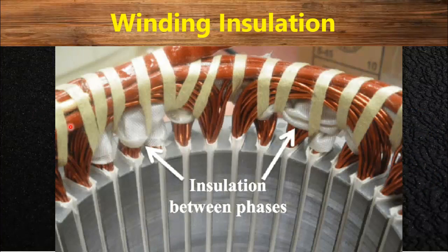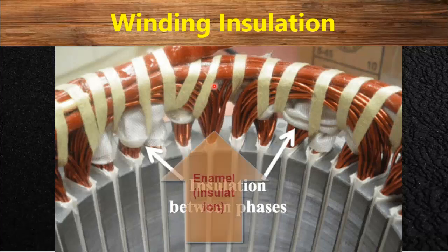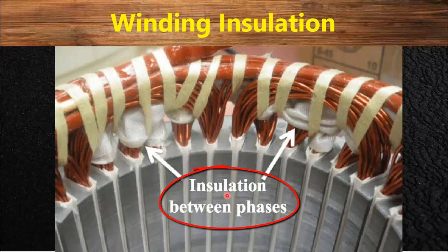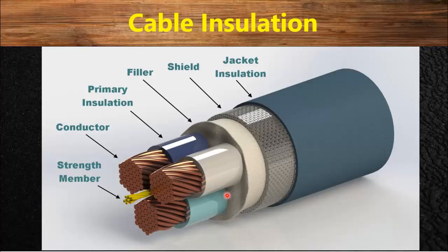Every electrical wire in the plant, whether it is a motor, generator, cable, switch, or transformer, is carefully covered with some form of electrical insulation. For example, in motors the windings are covered with enamel so that every loop of the winding is insulated from another loop. You can see another type of insulation which insulates the winding from the core of the motors, and this type of insulation is also used to insulate different phases in three-phase motors.